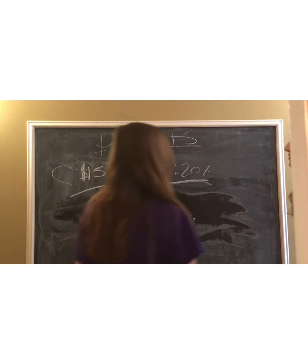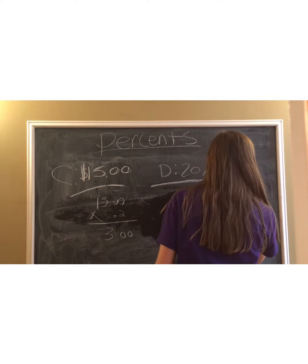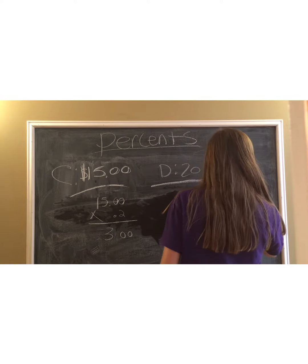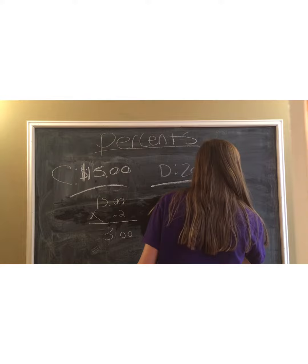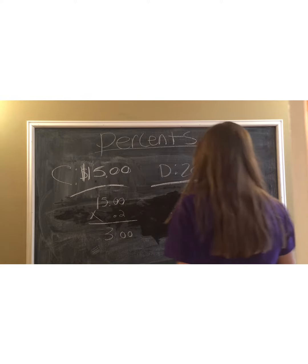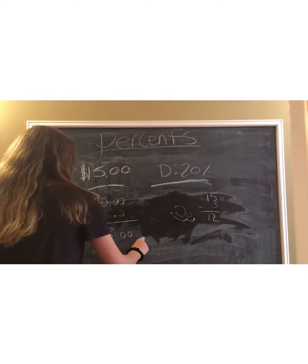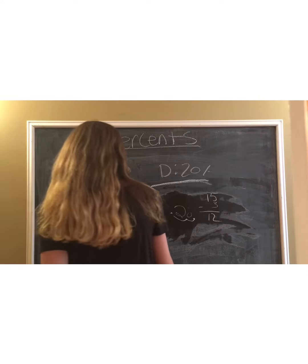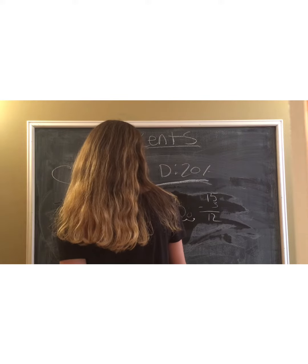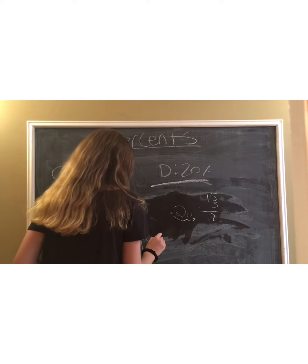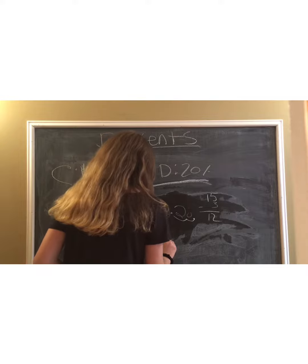That equals $3. Then you subtract 15 by 3, which equals $12. So now your new price is $12, and that's how you do percents.